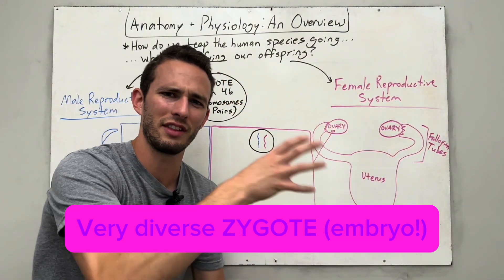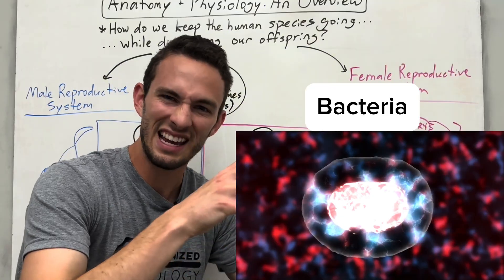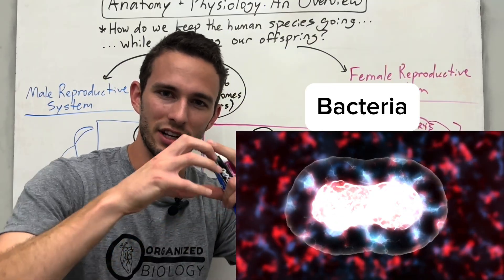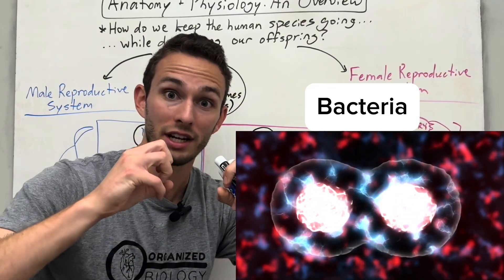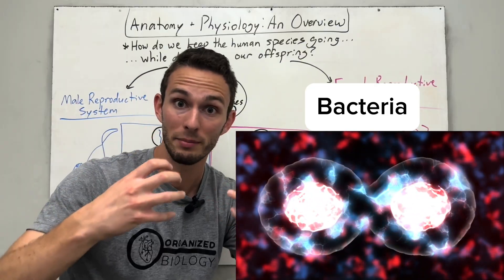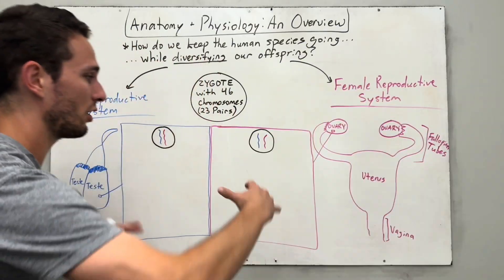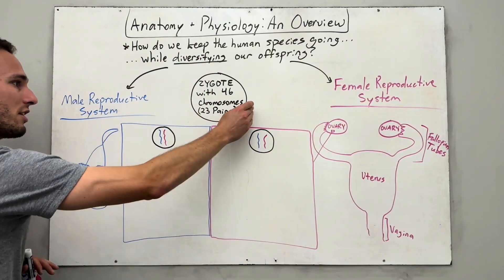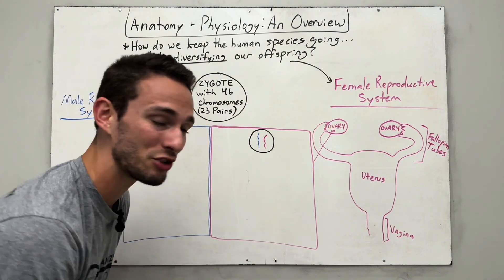This is very different from bacteria that replicate asexually, where it's basically an exact replica — a copy of themselves — whereas here, we're making a brand new human.